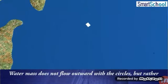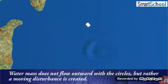This shows that the water mass does not flow outward with the circles but rather a moving disturbance is created.